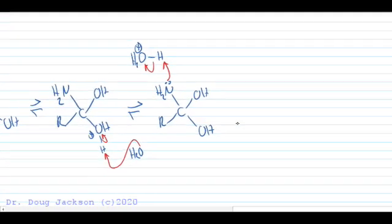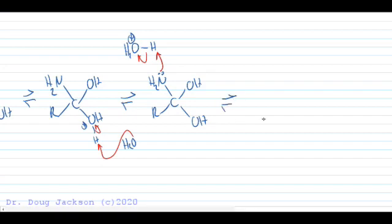And now we've activated. Let me get rid of that carbon symbol there. Now we've got a good leaving group. We can push this through with enough heating, kicking off that ammonia leaving group, and we form our carboxylic acid.